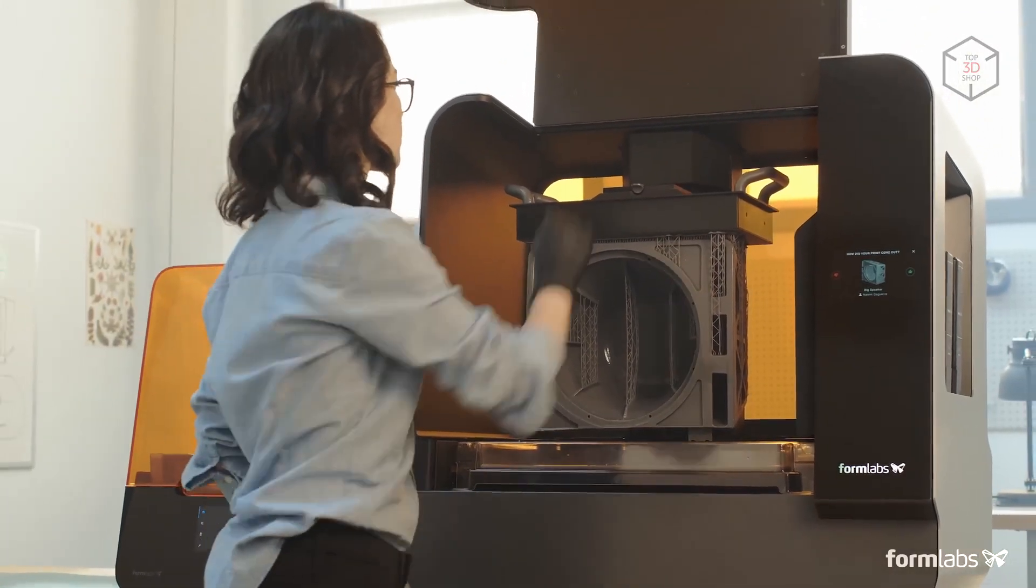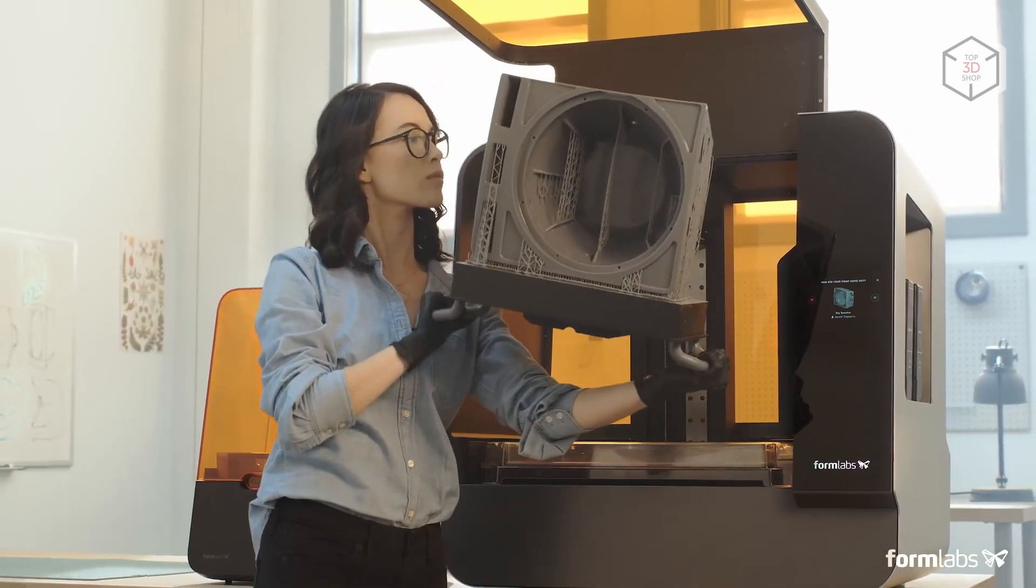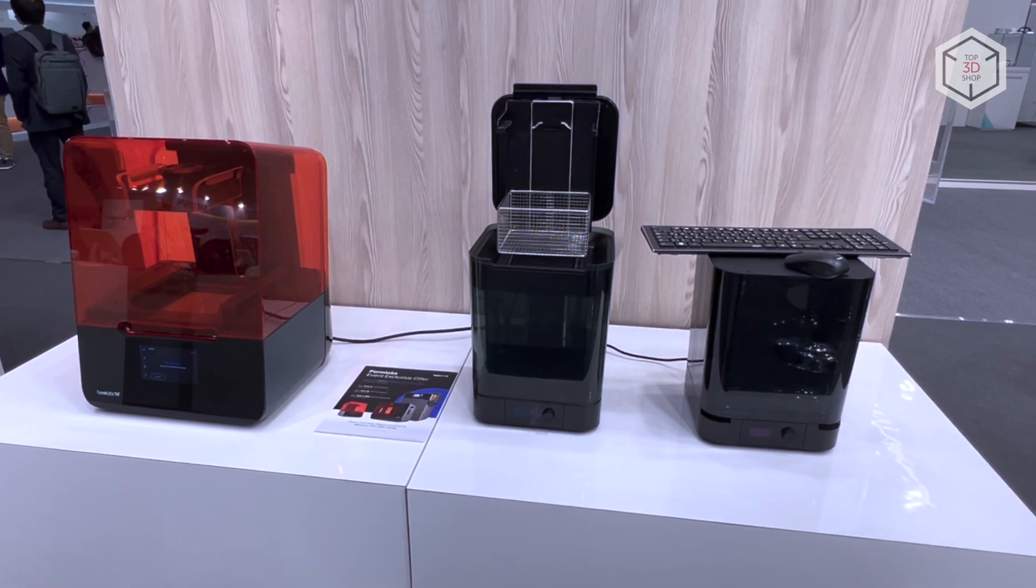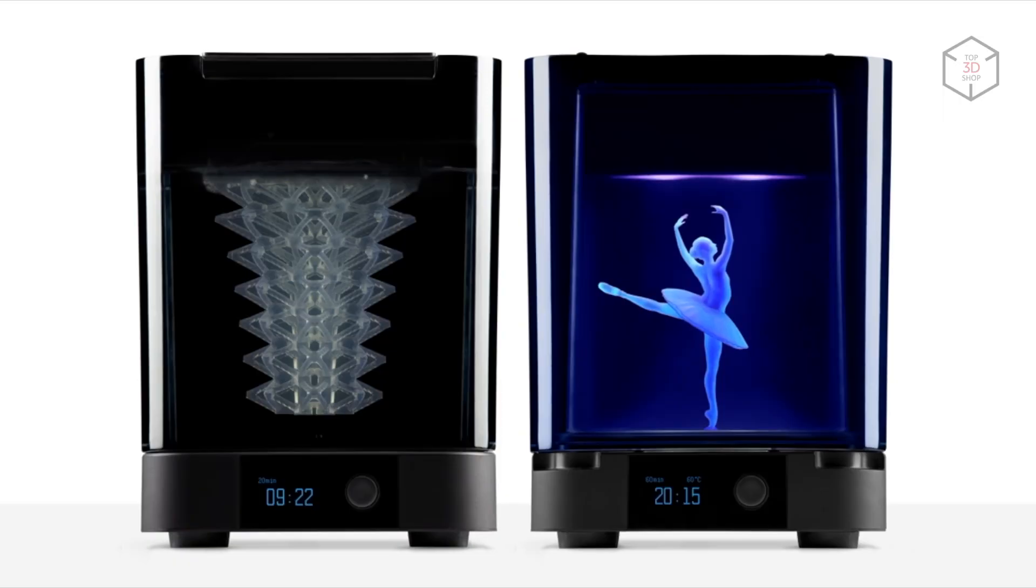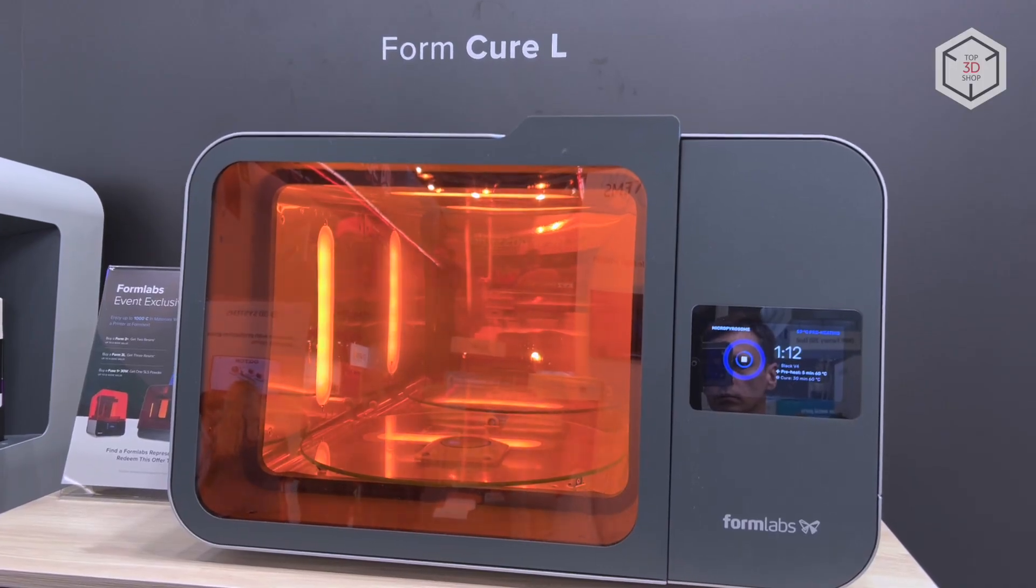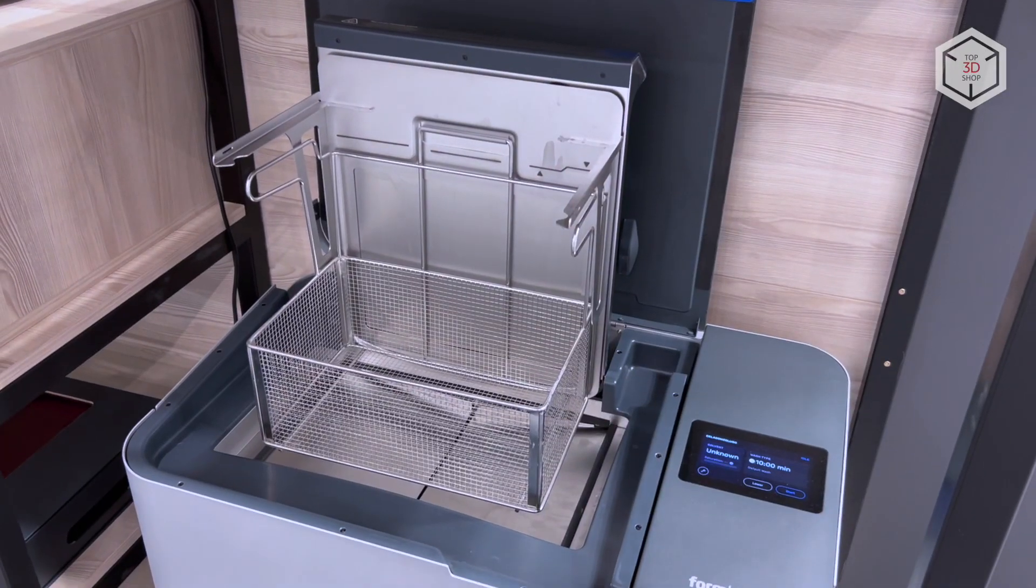For post-processing of finished products, the manufacturer offers two dedicated devices. Form Wash facilitates cleaning of parts from resin residues, and Form Cure accelerates final polymerization of finished prints. The Formlabs line also includes large format devices for post-processing with the index L.